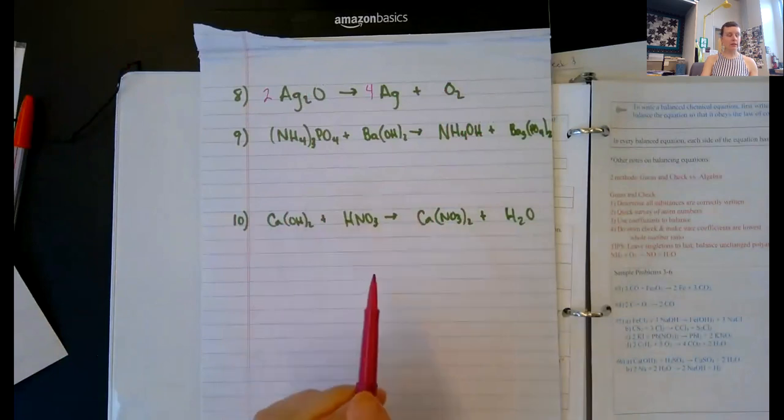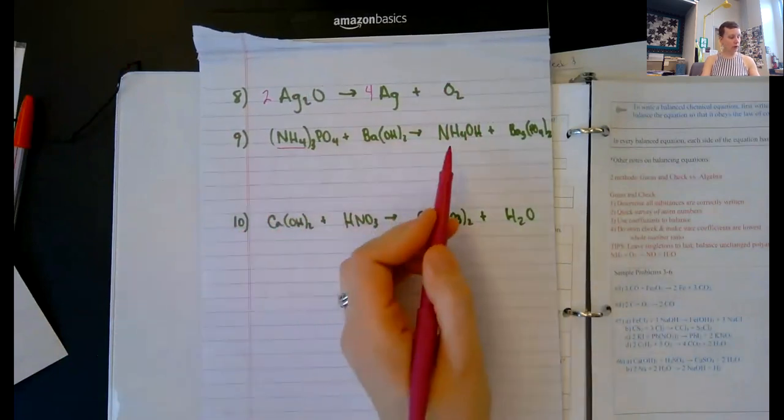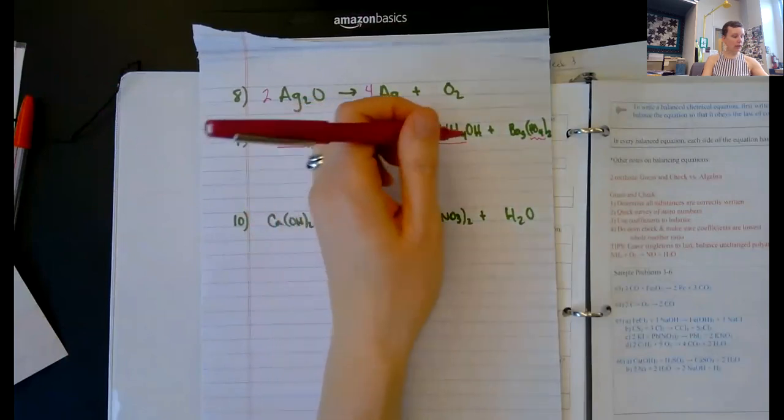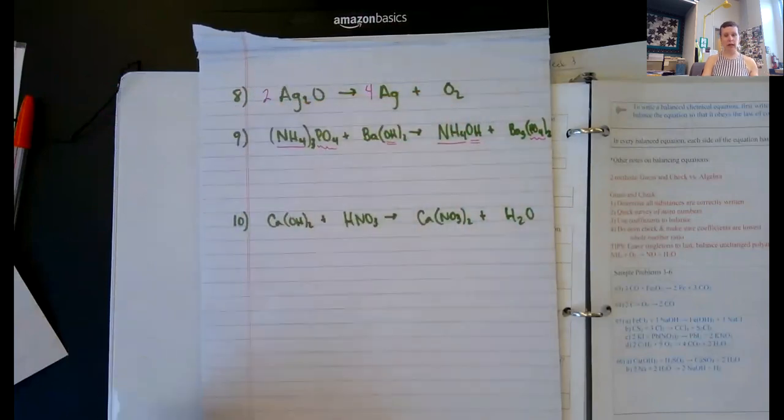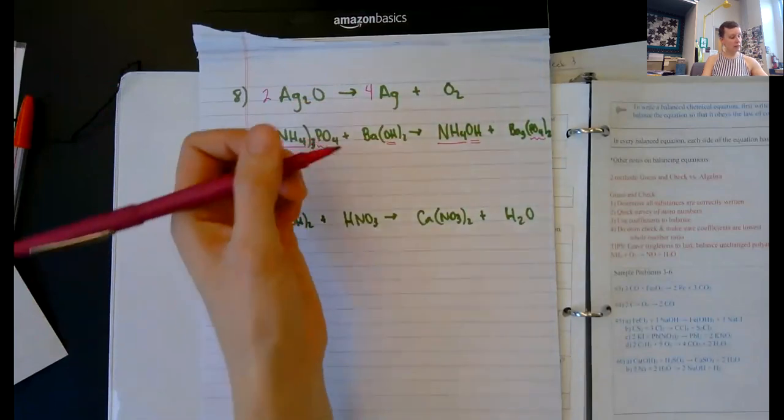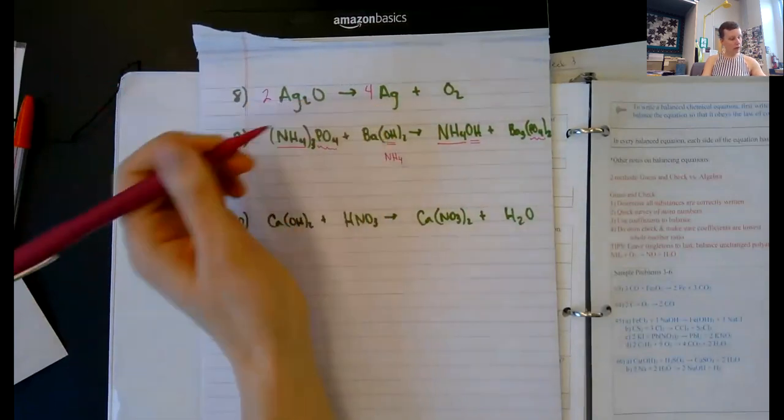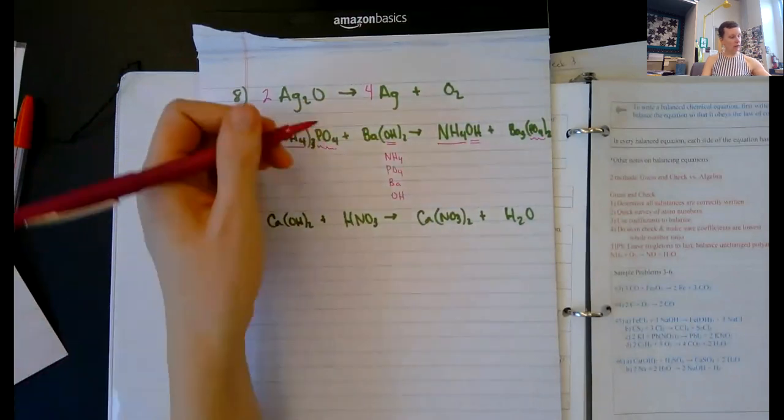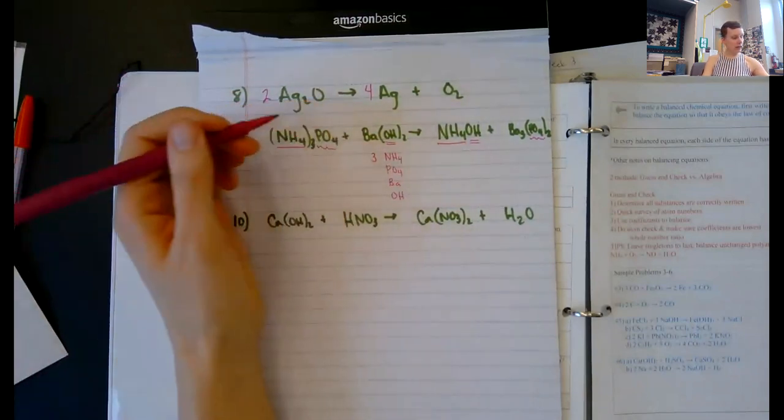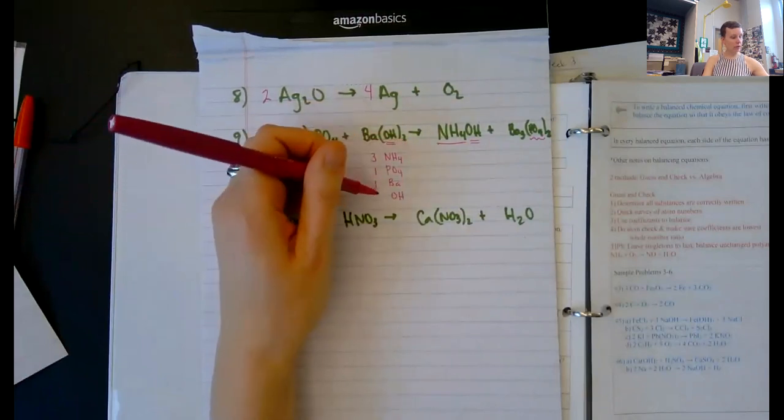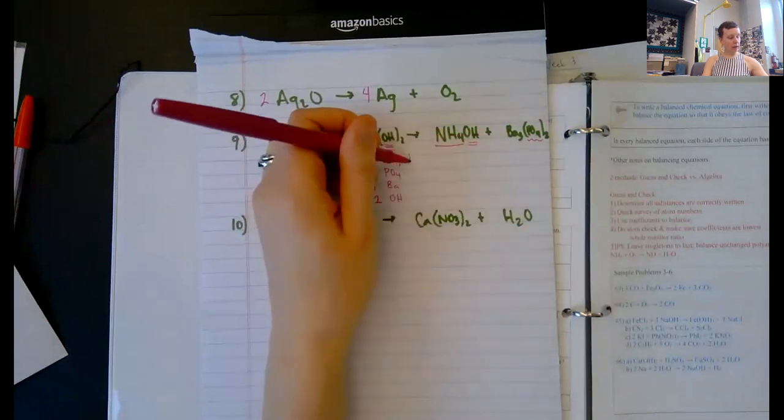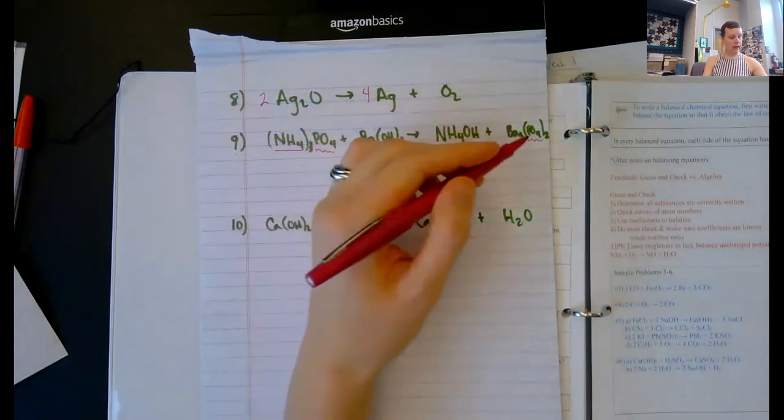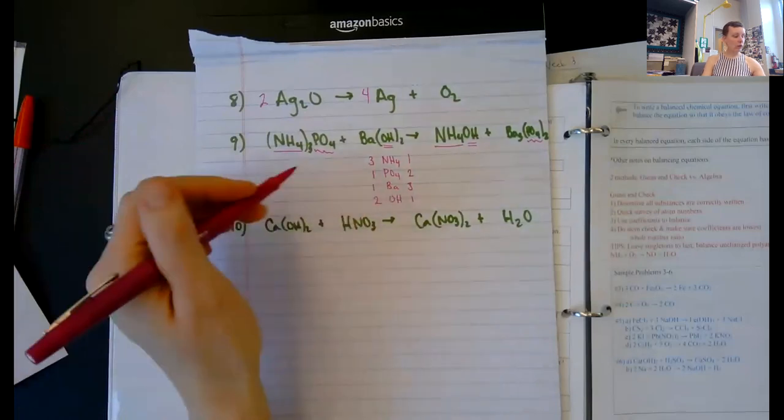This one, same thing as the other one. You can chunk NH4. You can chunk PO4. And you can chunk OH. Double underline that one. So that way you still only have four pieces to this equation. So we have NH4, we have PO4, we have barium, and we have hydroxide. I have three NH4s because it's in parentheses on this side. I only have one phosphate. I have one barium. I have two hydroxides on this side. One NH4, one hydroxide, three bariums, and two phosphates.